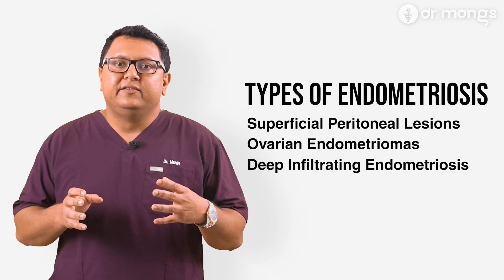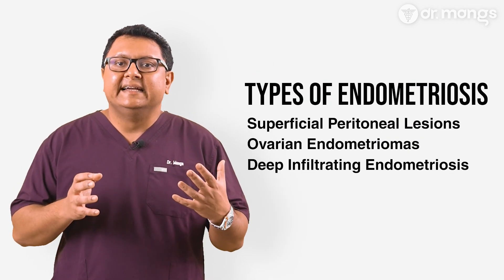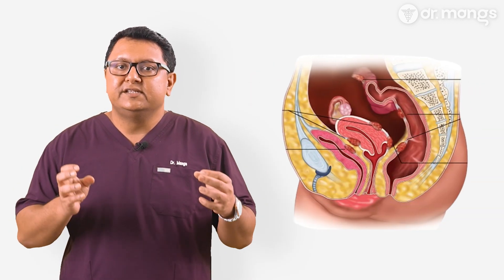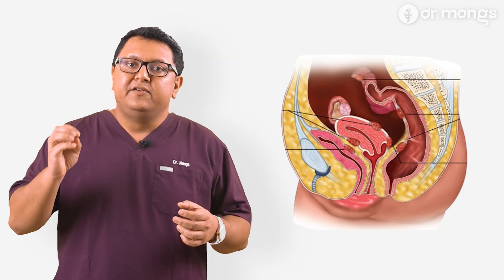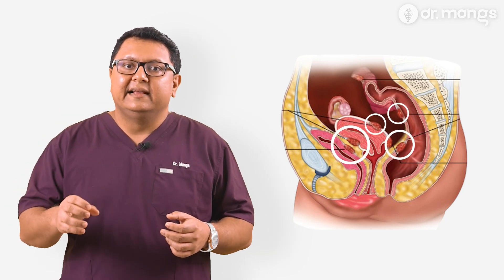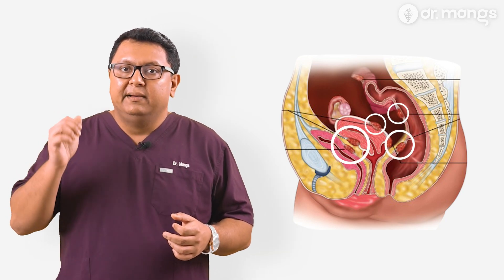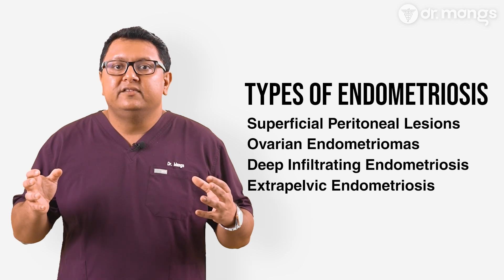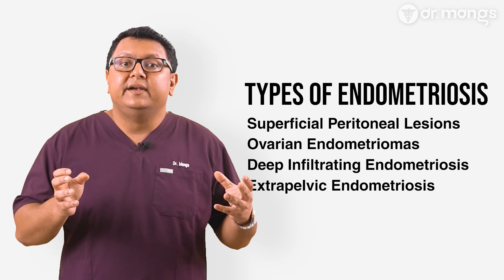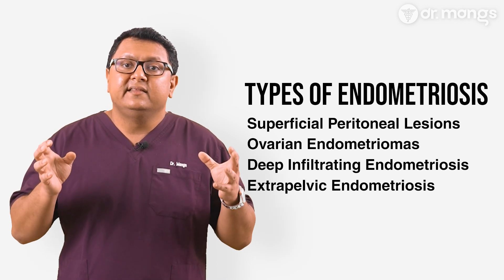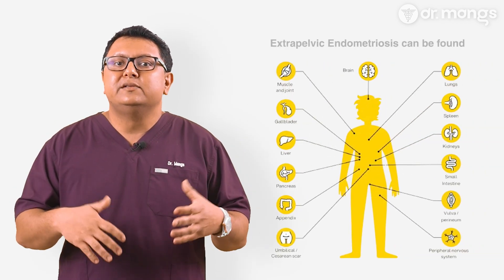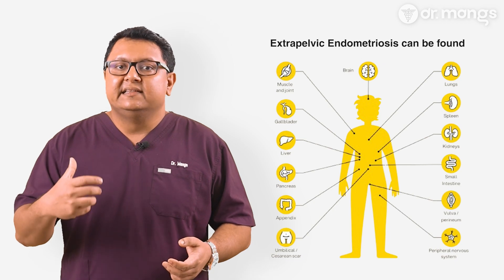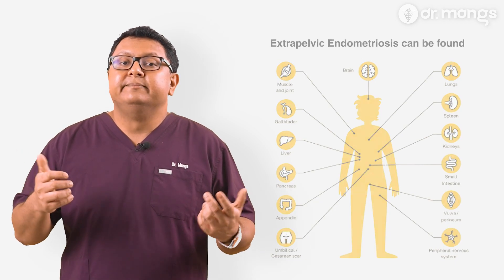Deep infiltrating endometriosis, or DIE, is a more severe form where the endometriosis tissue penetrates deeper into pelvic organs like the bladder, bowel, and nerves. Extra pelvic endometriosis is not that rare — in this, the endometriosis tissue can be found outside the pelvis in areas like the lungs, diaphragm, and even the brain.